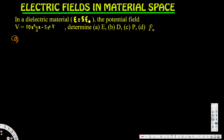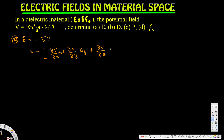Now let's look at the first one. We have to find E, the electric field, which can be calculated using negative del V. Since we have V provided, it's easy to find — it's just the partial derivative of V with respect to x, y, and z in the ax, ay, and az directions.